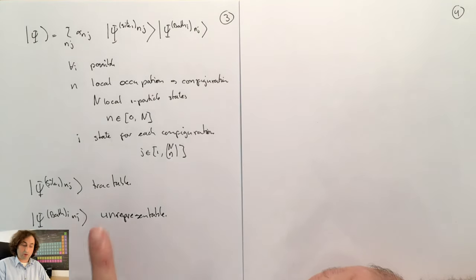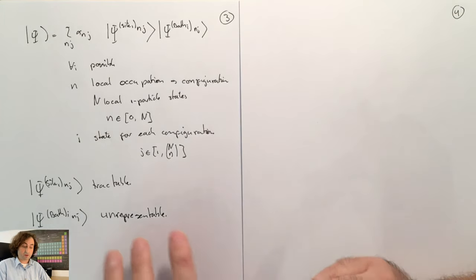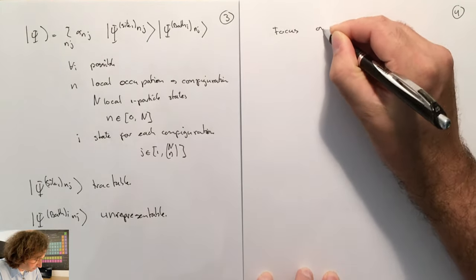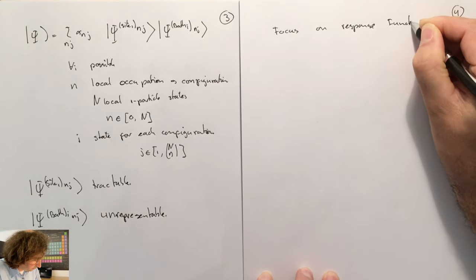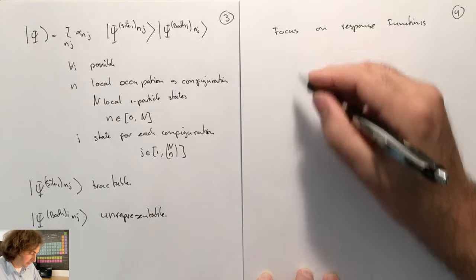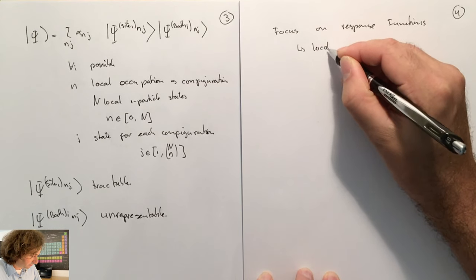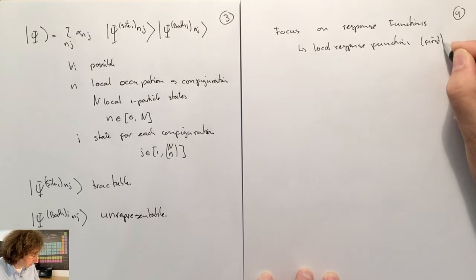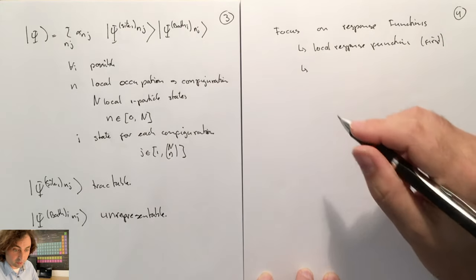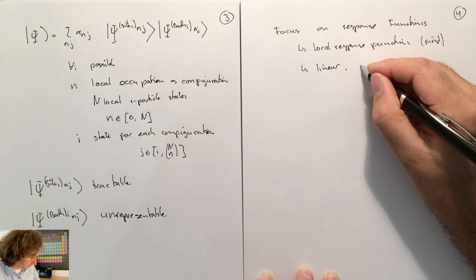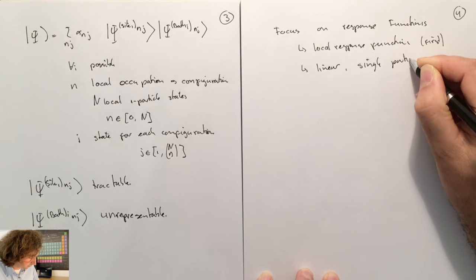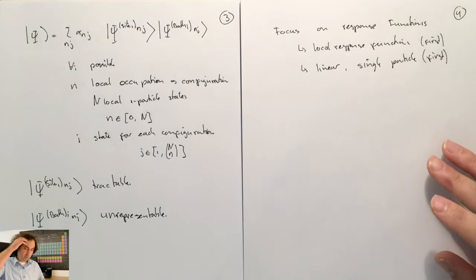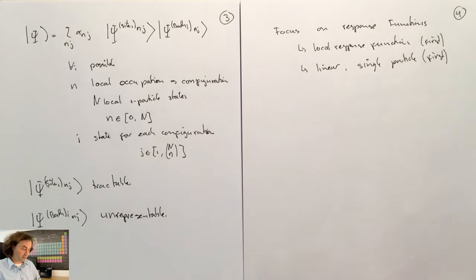We have to move away from representing our systems by wave functions, because there's no way to represent that wave function. So we're going to focus on response functions — specifically local response functions, linear response functions, and single-particle response functions. Both of these are approximations needed for dynamical mean field theory, but you can go beyond them.